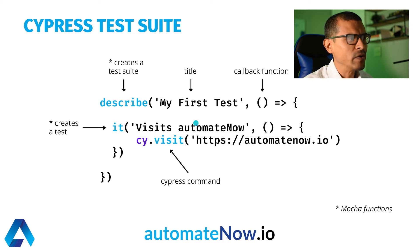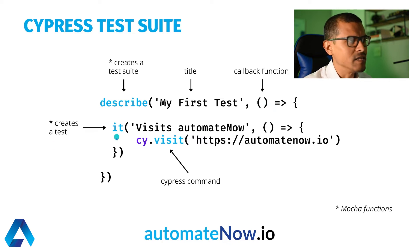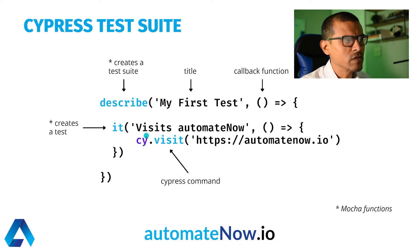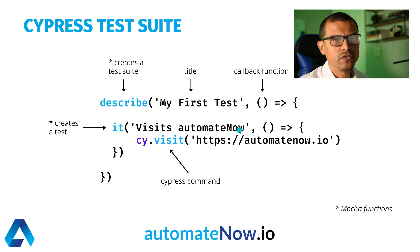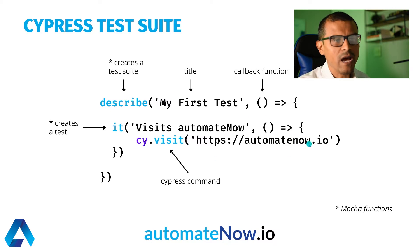What you see now is how we build a test suite in Cypress. Notice that we have this describe function being called here — this creates a test suite. Here we see the title of this test suite along with an anonymous callback function. Then we see this it function, which creates a new test. It also consists of a title and a callback function. The title describes what this test is going to do, and inside the test we can see the commands that are going to be executed. In this case we're using cy.visit, which is the command used to visit any website in Cypress — in this case, the automateNow.io website.